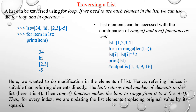Now we'll see list traversal. A list can be traversed using a for loop. For example, for a list [34, 'i', [2,3], -5], using 'for item in lst: print(item)' prints each element in sequence: 34, then 'i', then [2, 3], then -5.